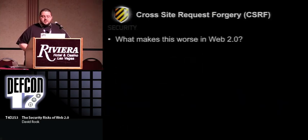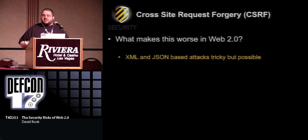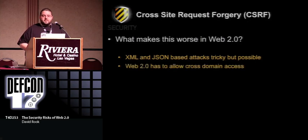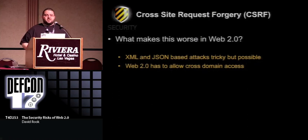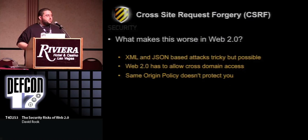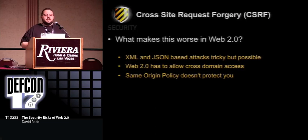What can make this worse in Web 2.0? We can do attacks using XML and JSON. I'm going to look at a JSON-based cross-site request forgery attack in a minute. One of the biggest issues with Web 2.0 is that cross-domain access is essential. Mashup sites are essentially built as a cross-site scripting attack because everything is cross-domain requests. And same-origin policy isn't going to protect you — XML HTTP requests and even JSON data should only be called from the same domain, but we'll look at how you can get around that as well.